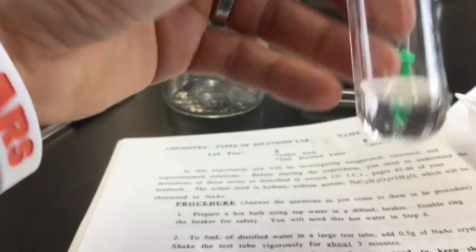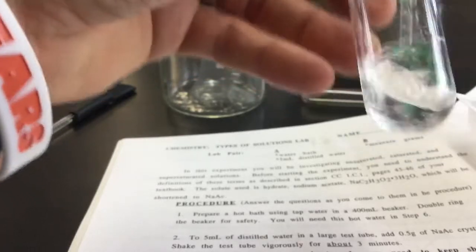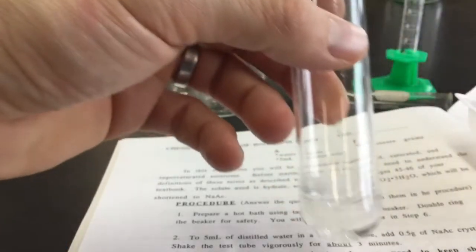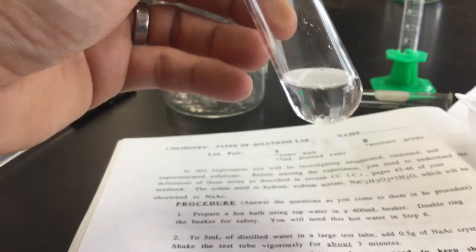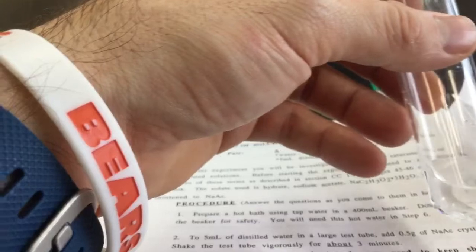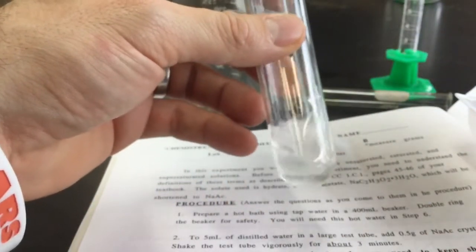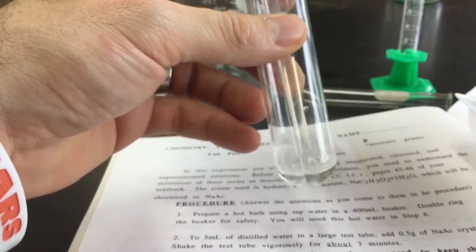The first question says, did all the sodium acetate dissolve? And if I hold it close to the camera here, I think you can see some crystals still at the bottom there. If that's the case, you can always take the rubber policeman here, stir it around a little bit, and check it out and see if it goes away.